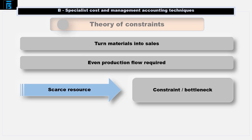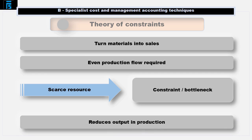The sorts of issues that might cause a bottleneck would be availability of material, unreliable suppliers, labour or machines, or a poor salesperson resulting in sales volumes being limited. If there is a bottleneck reducing output within the production process, we want to make sure that we don't produce higher output levels before the bottleneck than the bottleneck can cope with, as this will cause the levels of work in progress before the bottleneck to continually increase, hence the need for an even production flow.